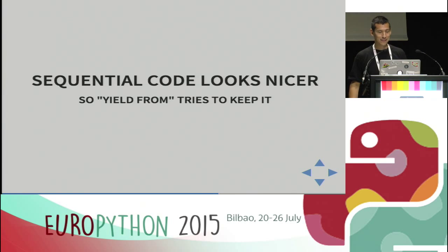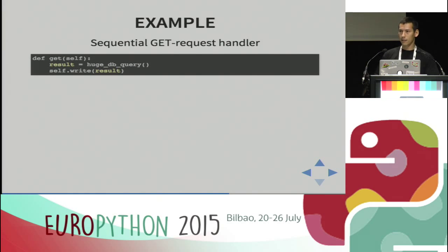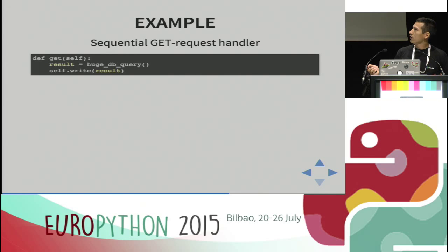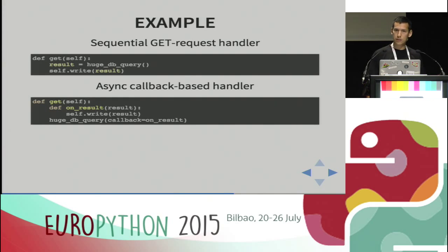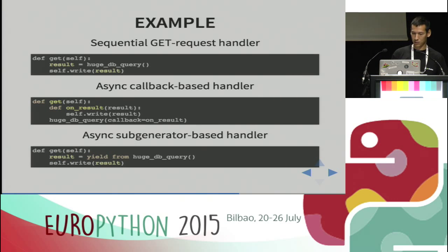Sequential code obviously looks nicer. By introducing 'yield from' in Python 3, we have an attempt to write asynchronous code without callback hell. Now for a good example: we have a simple get handler. We have a huge database query that is blocking — the result is saved to a variable and written back to the user. With callbacks, we define a nested function passed as an argument to the database query, which calls it when the result is ready.